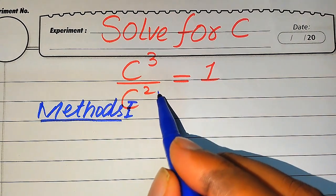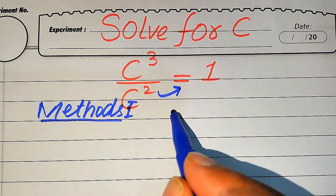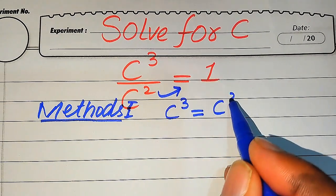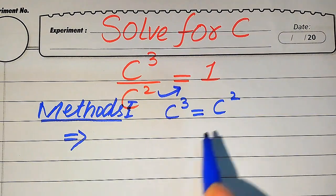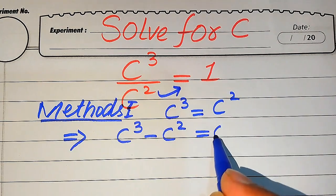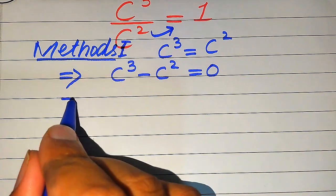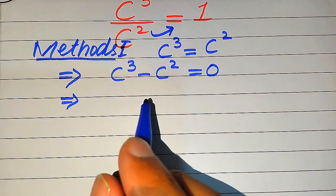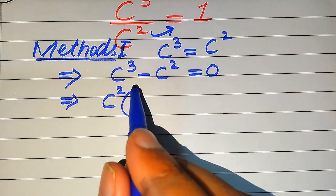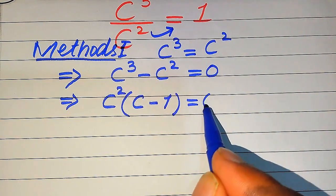In the first method, we move C squared to the right-hand side. Since C squared is divided on the left-hand side, when we move it to the right-hand side it is multiplied, giving us 1 times C squared equals C squared. Then we move C squared to the left-hand side, giving us C cubed minus C squared equals 0. Both terms involve C squared, so we factor out C squared.